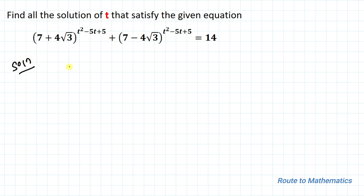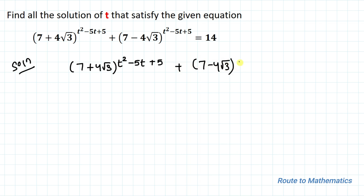So we have the equation: (7 + 4√3)^(t²-5t+5) + (7 - 4√3)^(t²-5t+5) = 14.